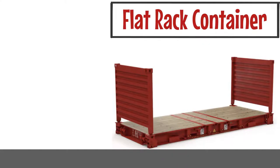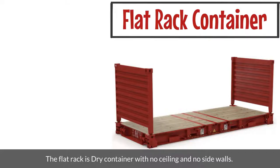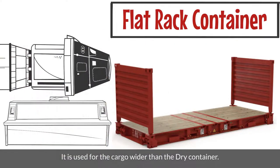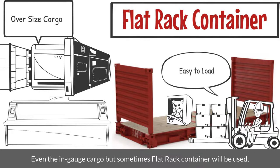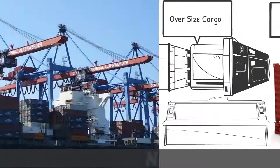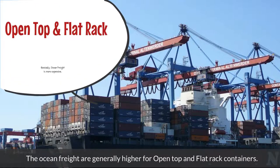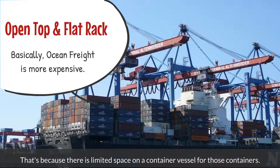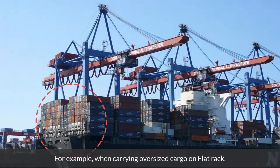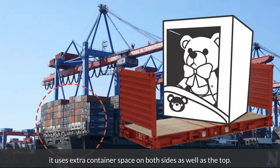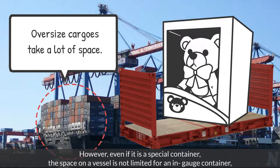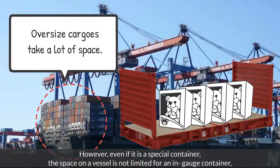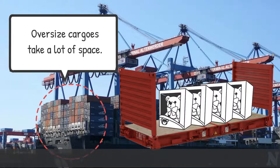Then, the flat rack container. The flat rack is a dry container with no ceiling and no side walls. It is used for cargo wider than the dry container. It is also used not only for oversized cargo, but also for gauged items that can fit inside a container. Even for gauged cargo, a flat rack container will sometimes be used when the factory loading facility is not sufficient. Ocean freight is generally higher for open top and flat rack containers because there is limited space on a container vessel for those containers. For example, when carrying oversized cargo on a flat rack, it uses extra container space on both sides as well as the top, so ocean freight is increased. However, even if it is a special container, the space on a vessel is not limited for a gauged container, so the sea freight can be kept down.